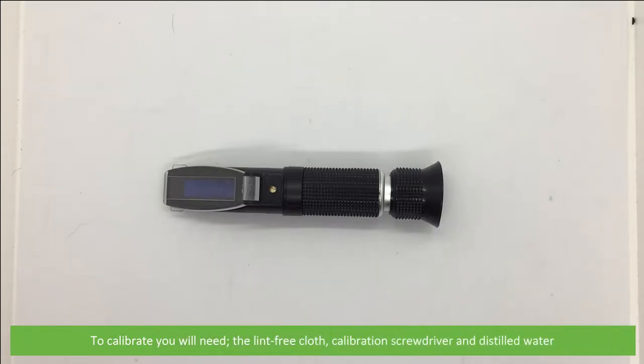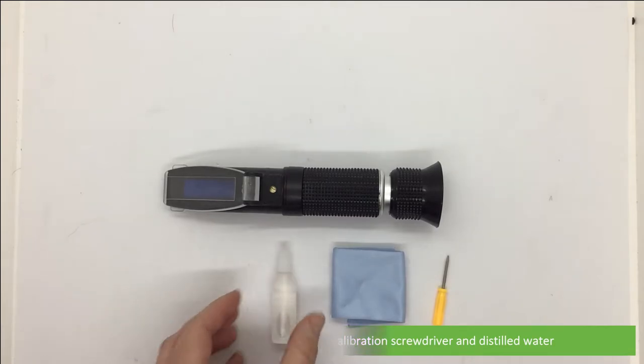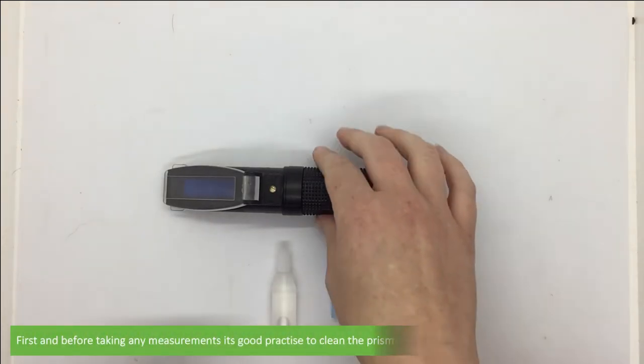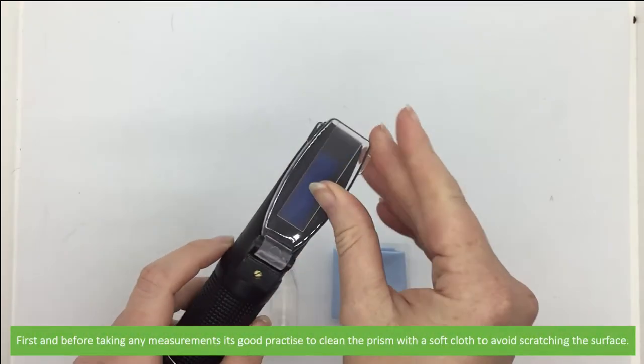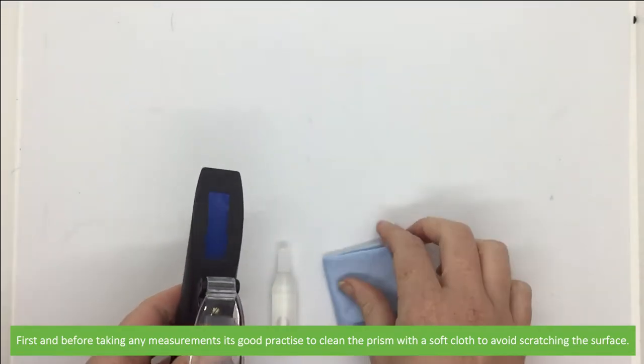To calibrate you will need the included lint-free cloth, the calibration screwdriver, and some distilled water. First and before taking any measurements, it's good practice to clean the prism with a soft cloth to avoid scratching the surface.